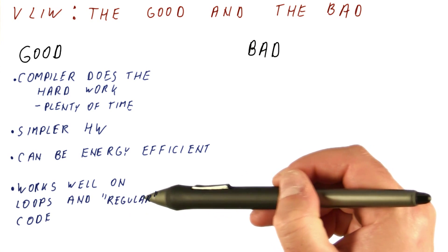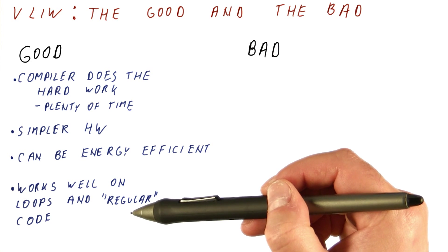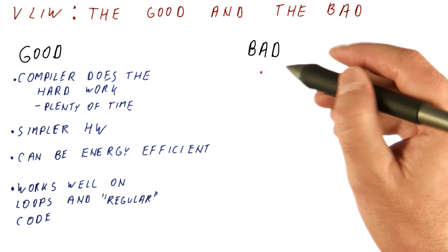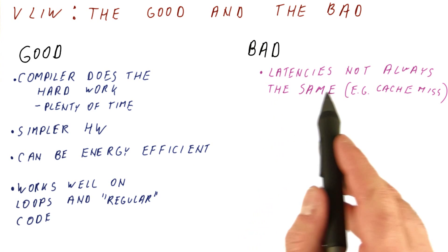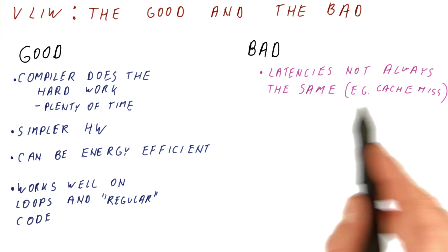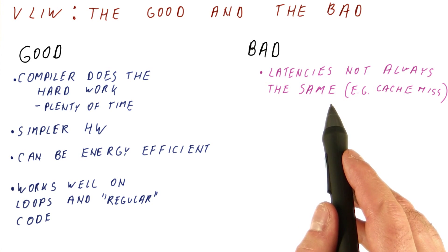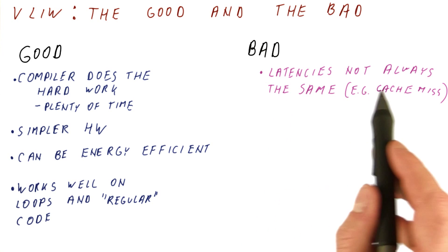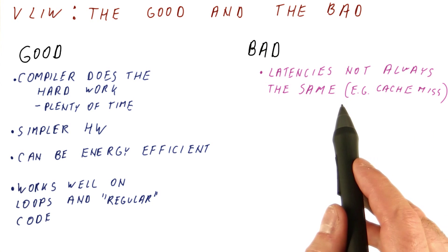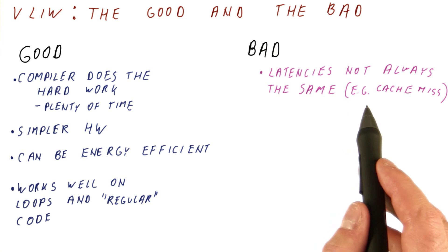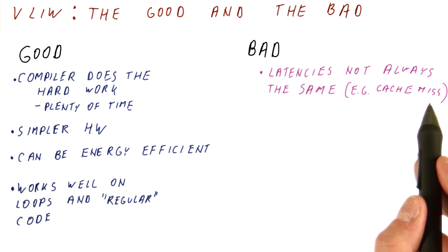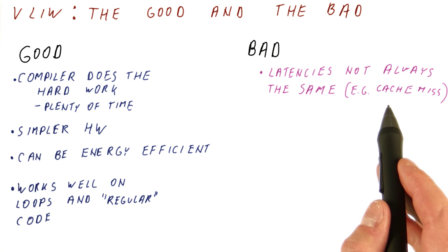The bad side of VLIW are that latencies of instructions are not always the same. The compiler has to assume some sort of latency in order to schedule code well. But sometimes the latencies cannot be determined exactly. So for example, we can plan for a load to have a cache hit latency, but then when it has a cache miss, suddenly there is a much longer latency than the compiler planned for.